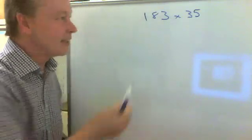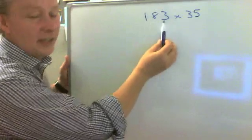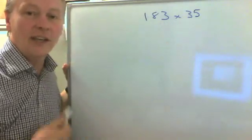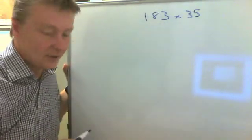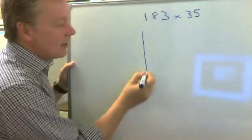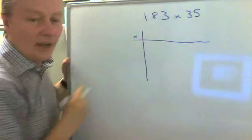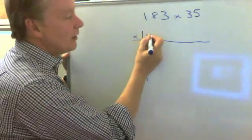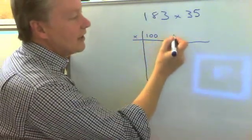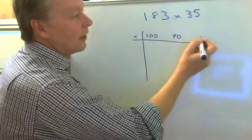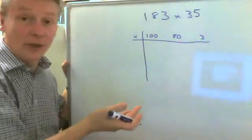So in other words, what I can do is I can write 183 broken down into its component parts. And the way that we present it is to use a grid like that, and we say I'm going to write 100, and then I'm going to write 80, and then I'm going to write 3.